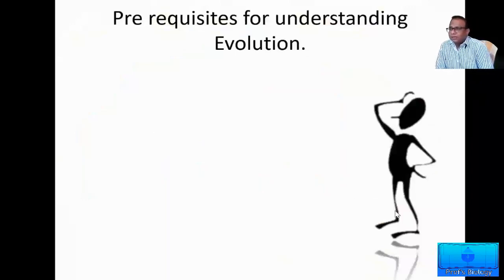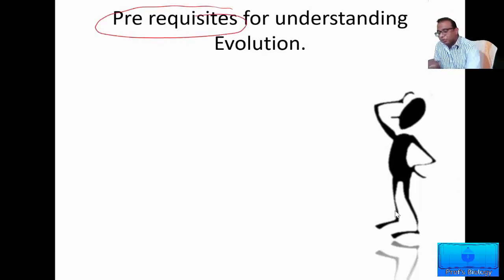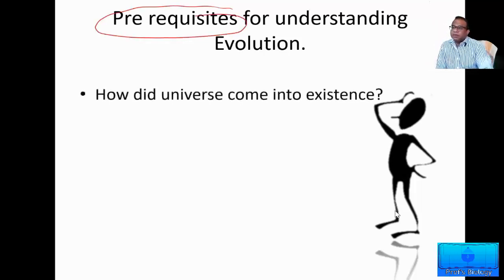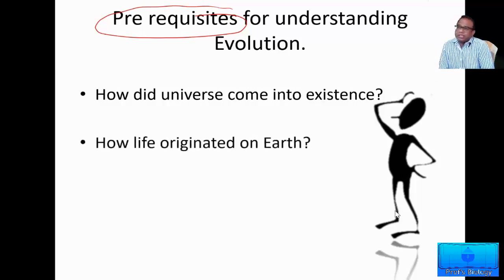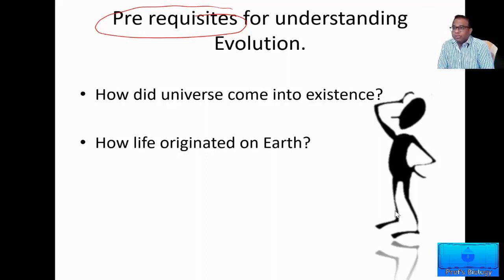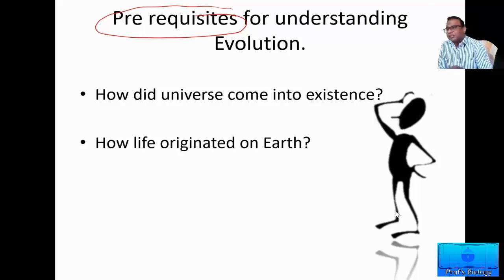Before we try to understand the process of evolution, a student is supposed to know certain prerequisites about how the universe formed — that is, how the universe came into existence and then how the earth originated. The origin of the universe and the origin of the earth are things one must know before trying to understand how life originated on earth and how this life became so diverse because of evolution. So let us try to understand how the universe evolved first.